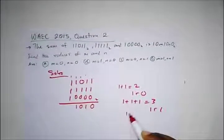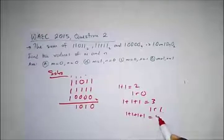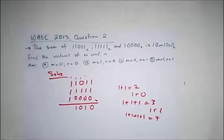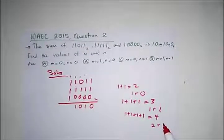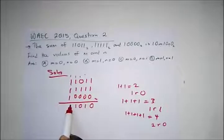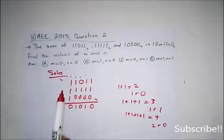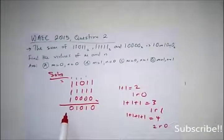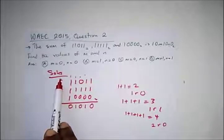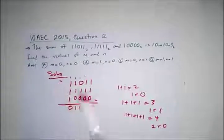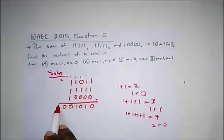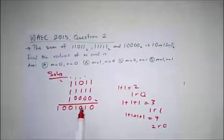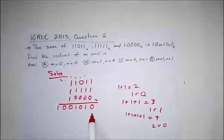In the next column, 1 plus 1 plus 1 plus 1 plus 1 plus 1 plus 1 equals 4. 4 in base 2 goes 2 times with remainder 0, so we write 0 and carry 2. When we carry 2, we carry it forward and work through the remaining columns to get our final result.